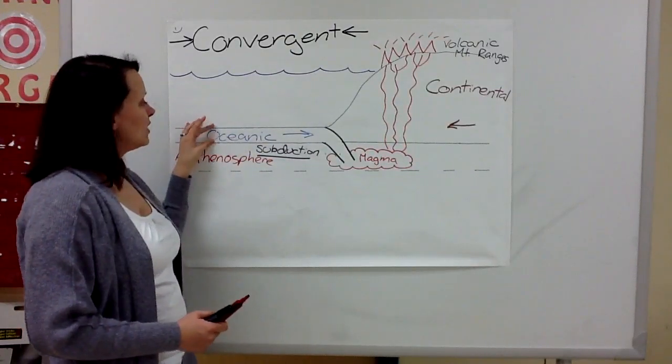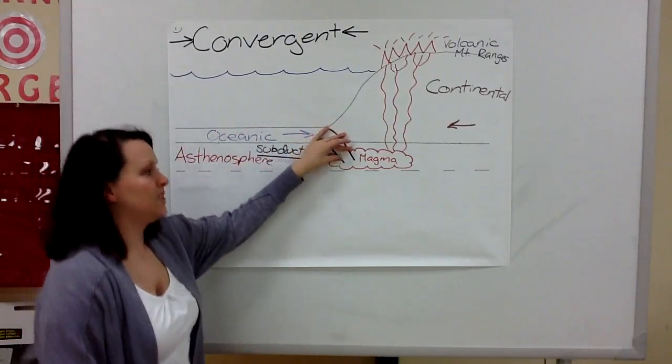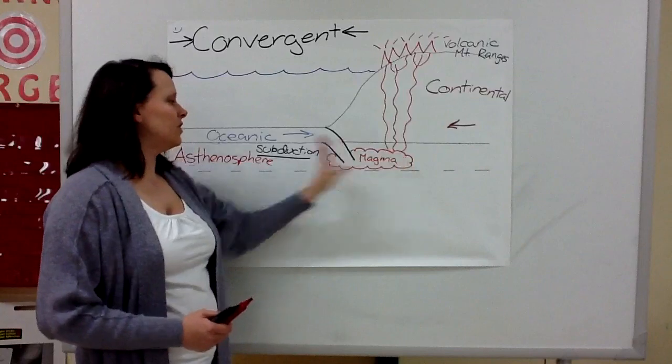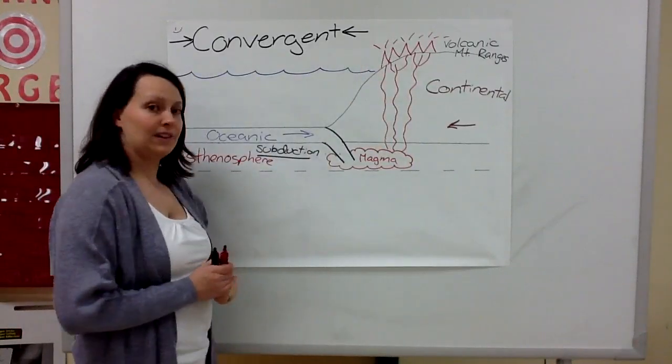Either way, the important thing to remember is that the oceanic crust subducts into the asthenosphere, melting and rising up to make volcanic mountain ranges.